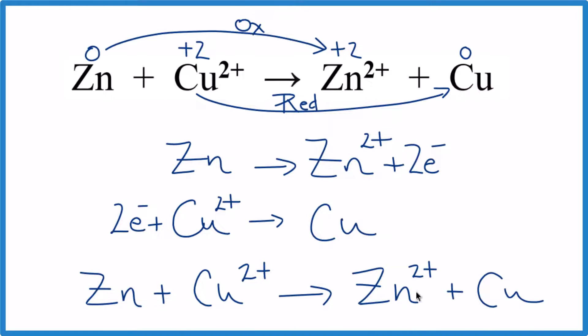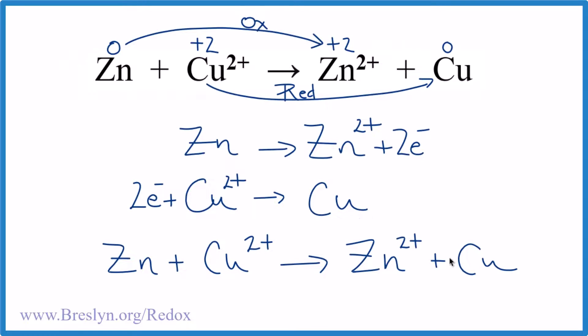You might notice that what we ended up with is what we started with. And that kind of makes sense. Zinc lost the two electrons. Copper gained the two electrons. It was reduced. And we ended up with solid copper here.